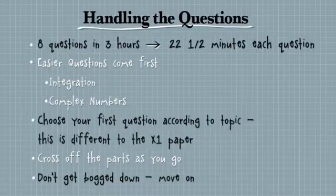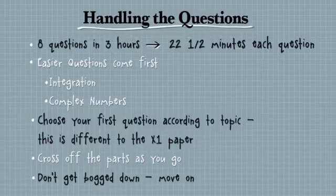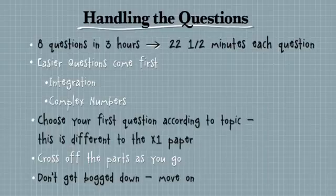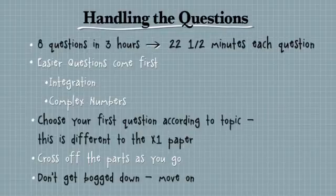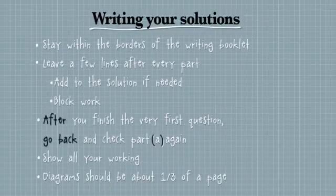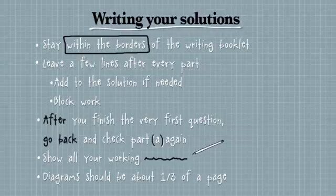But don't get bogged down. Sometimes you can be working on a question and you can sit there and you can think, I know how to do this, I know the answer, it's going to come any minute now, I've used 20 minutes, I know I can get it in just a minute more. Don't do that. Okay? Don't get bogged down. Move on, leave space, move on and come back. And then with this crossing off that I've mentioned, put a little mark somehow on the paper to know that if you've got time at the end, that's the one you're going to come back to first. Okay? So have a little bit of a hierarchy going.